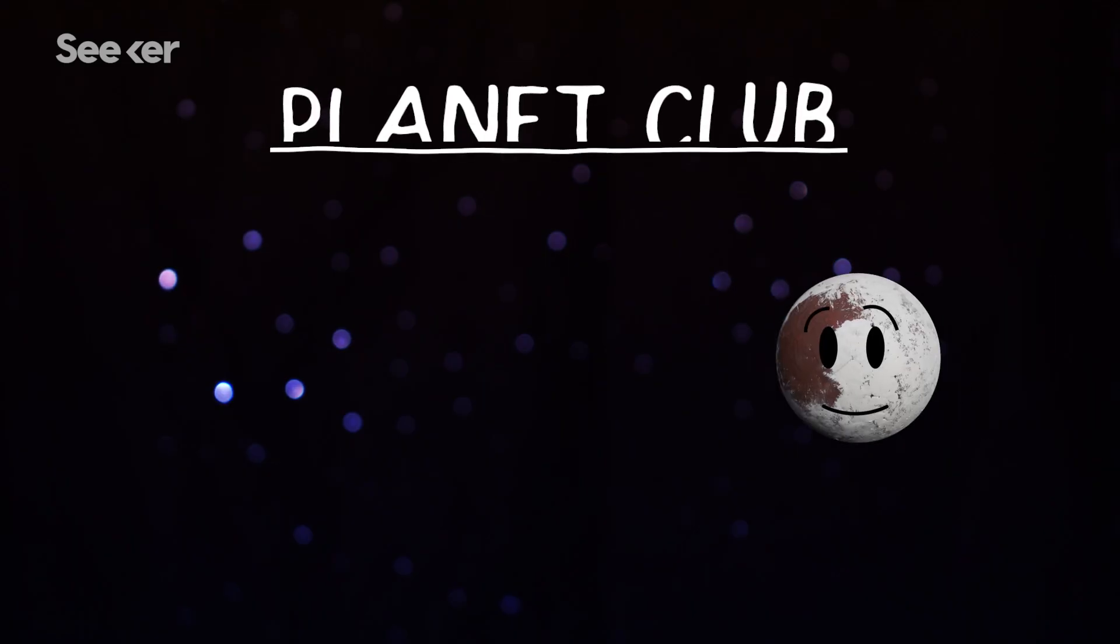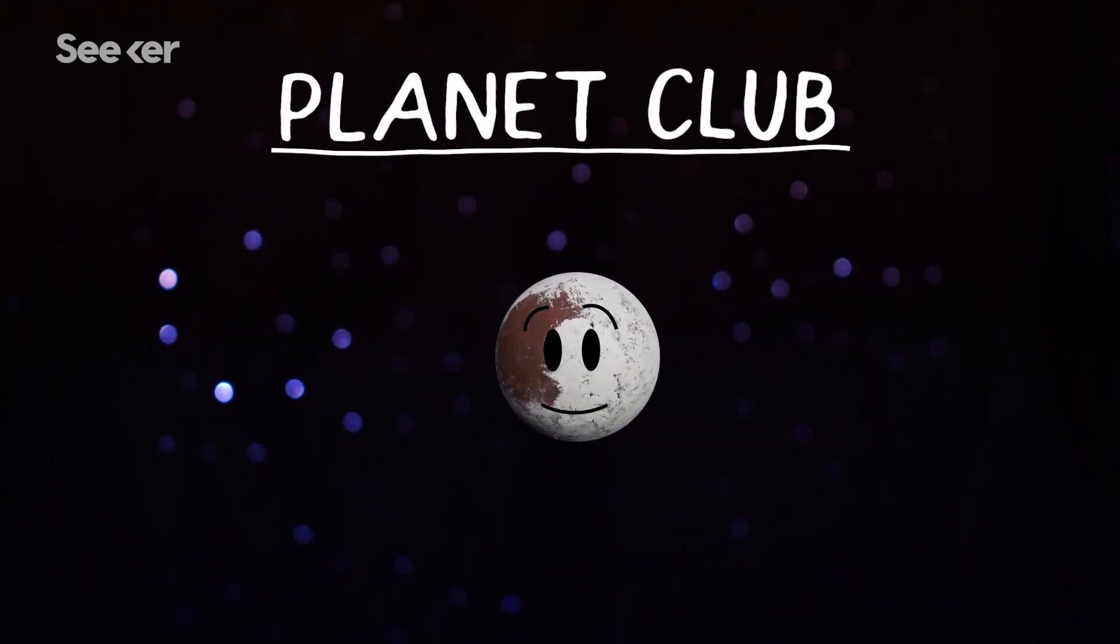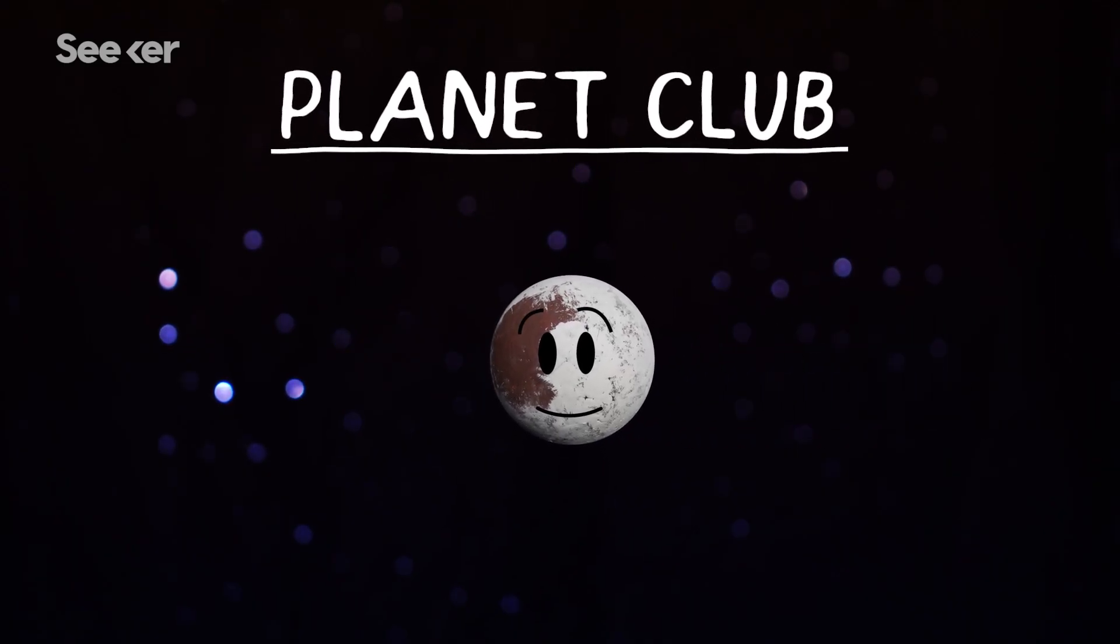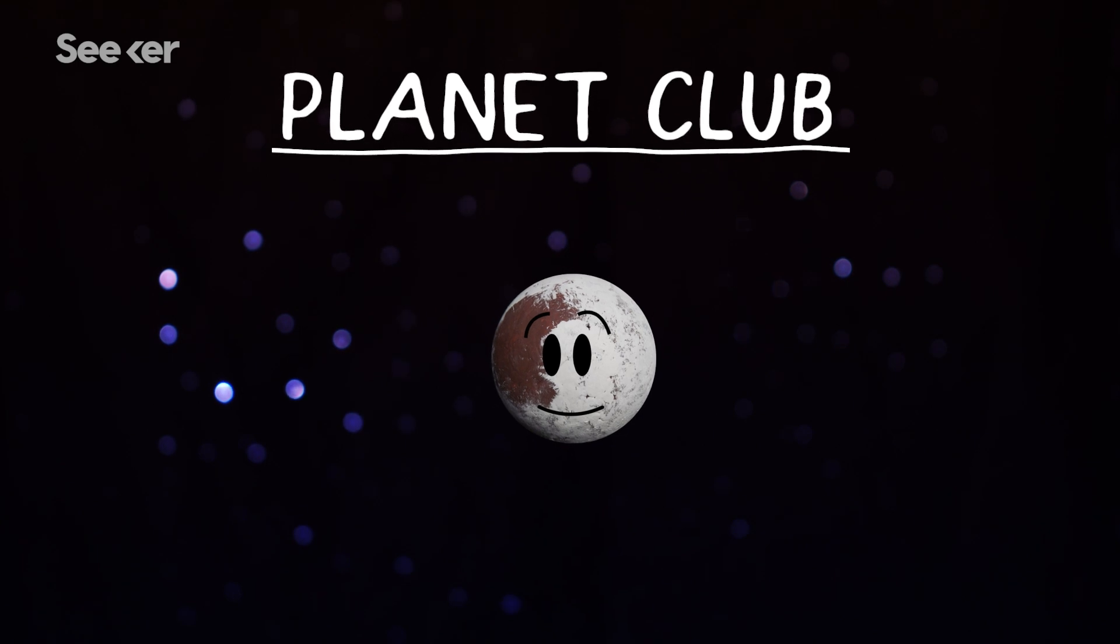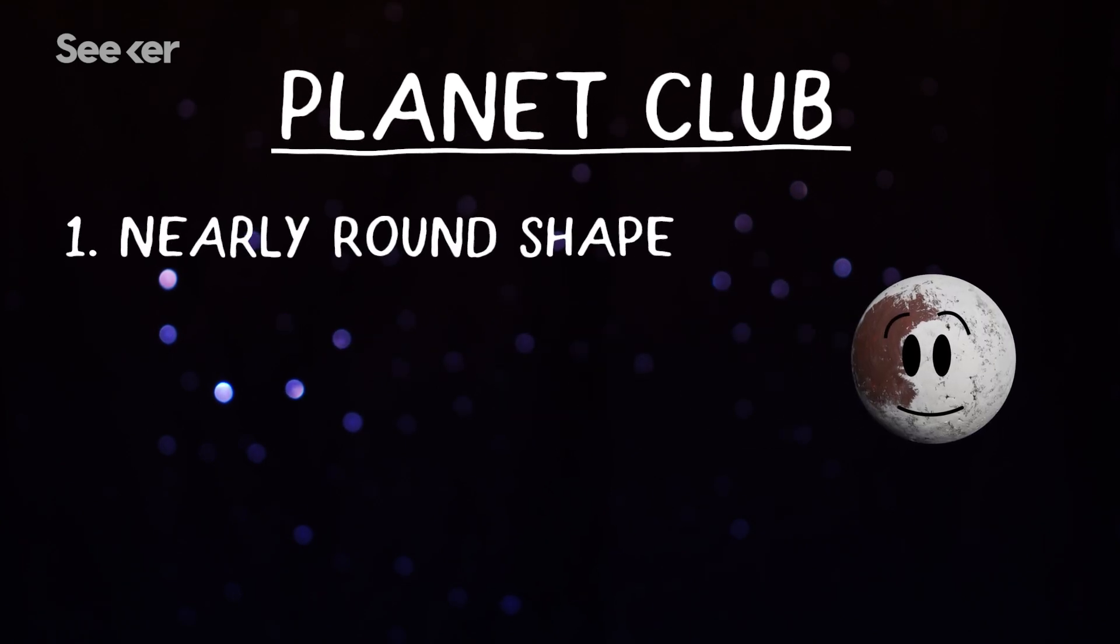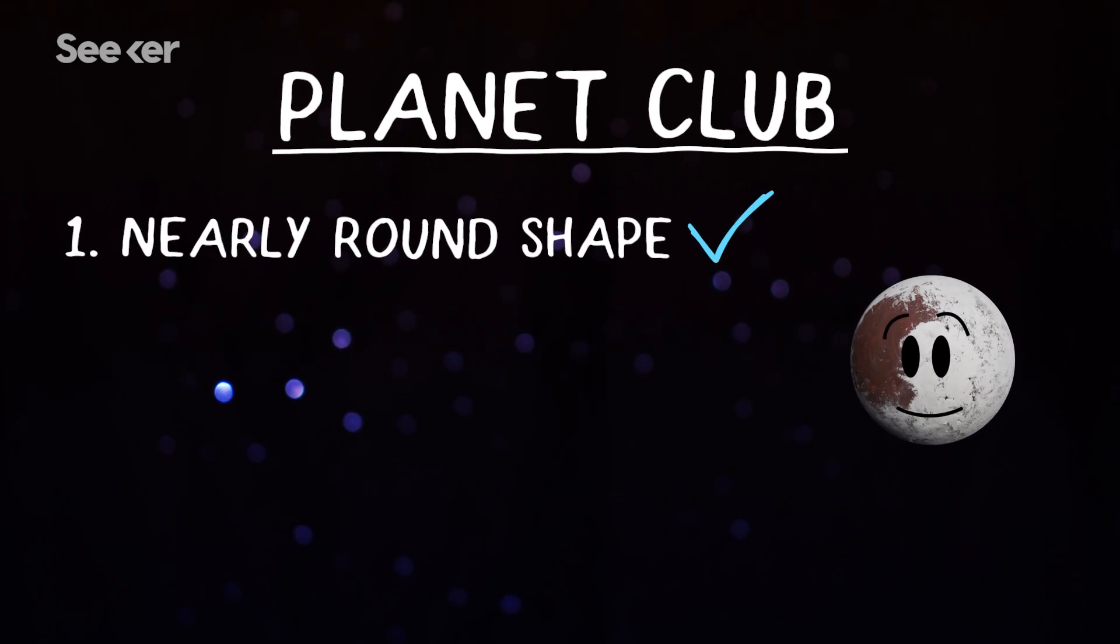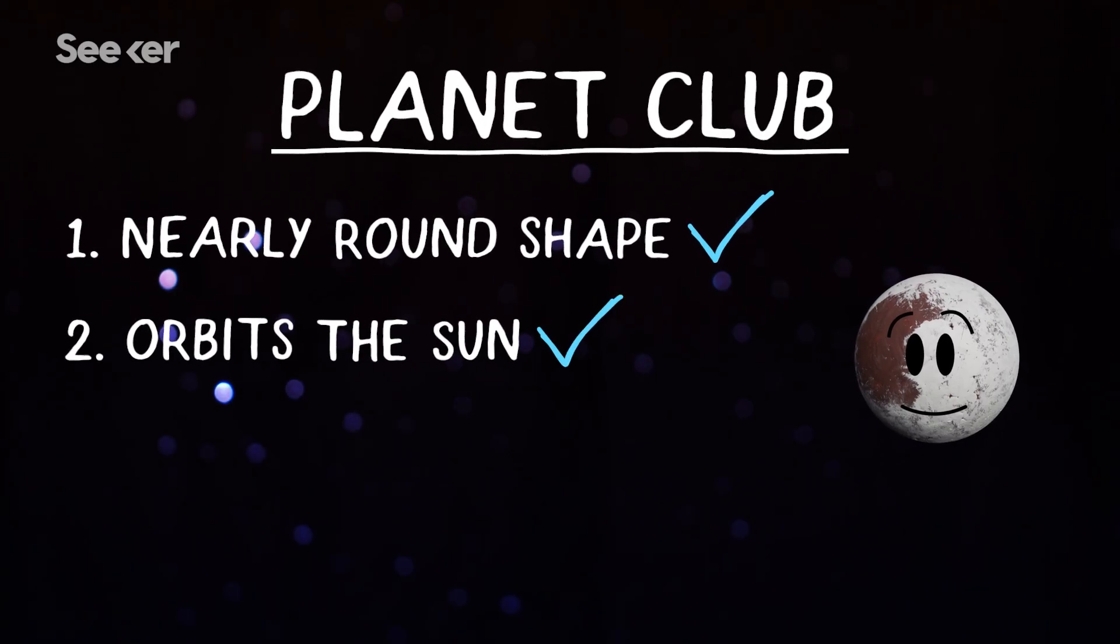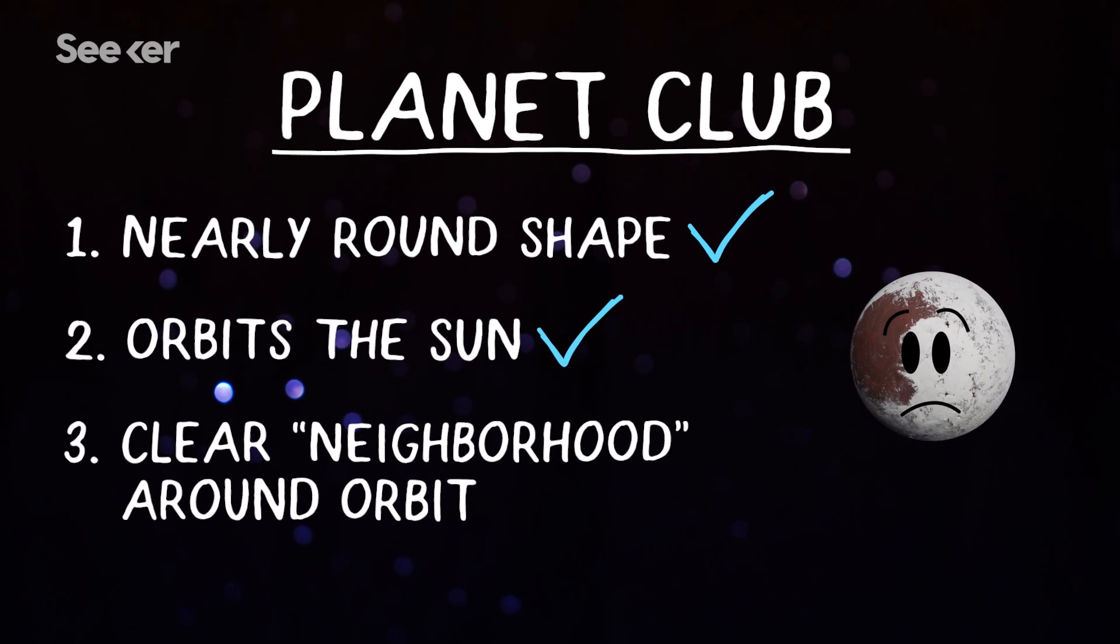As of 2006, there are three criteria a celestial body has to meet to be considered a planet, and Pluto meets two of them. He has enough mass and gravity to hold a spherical shape, and he orbits the Sun. But he doesn't clear the neighborhood around his orbit.